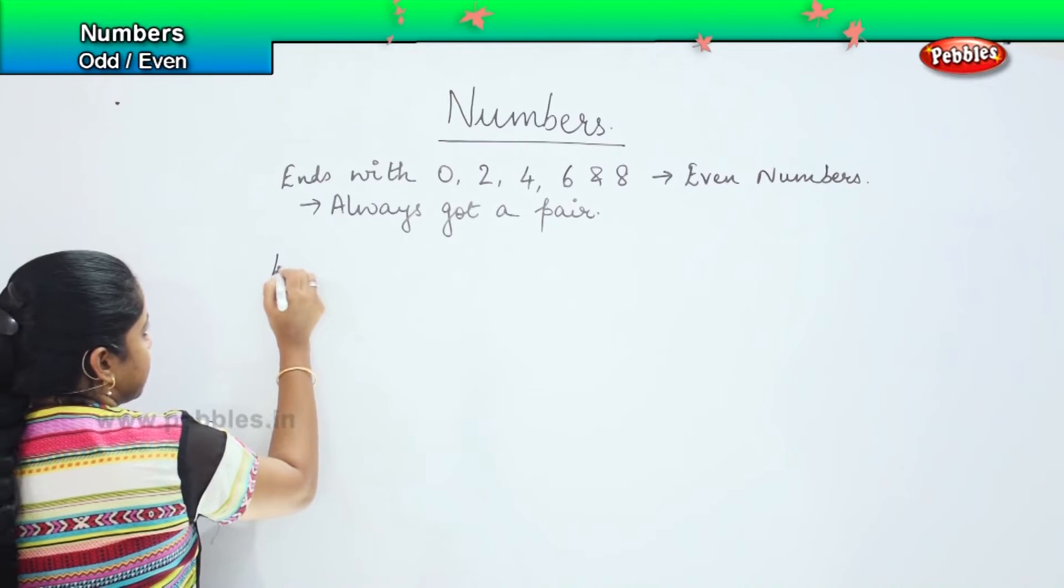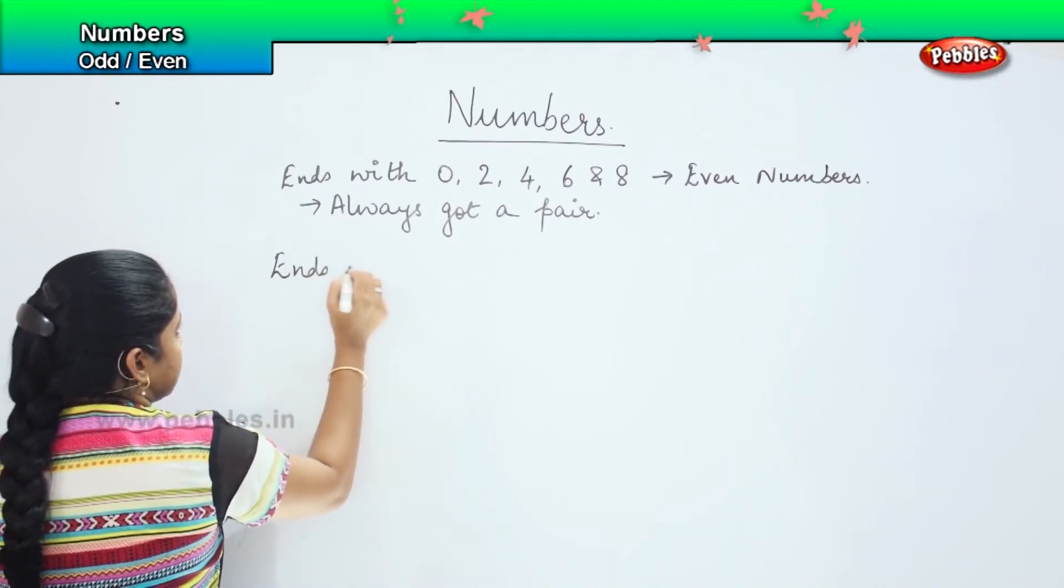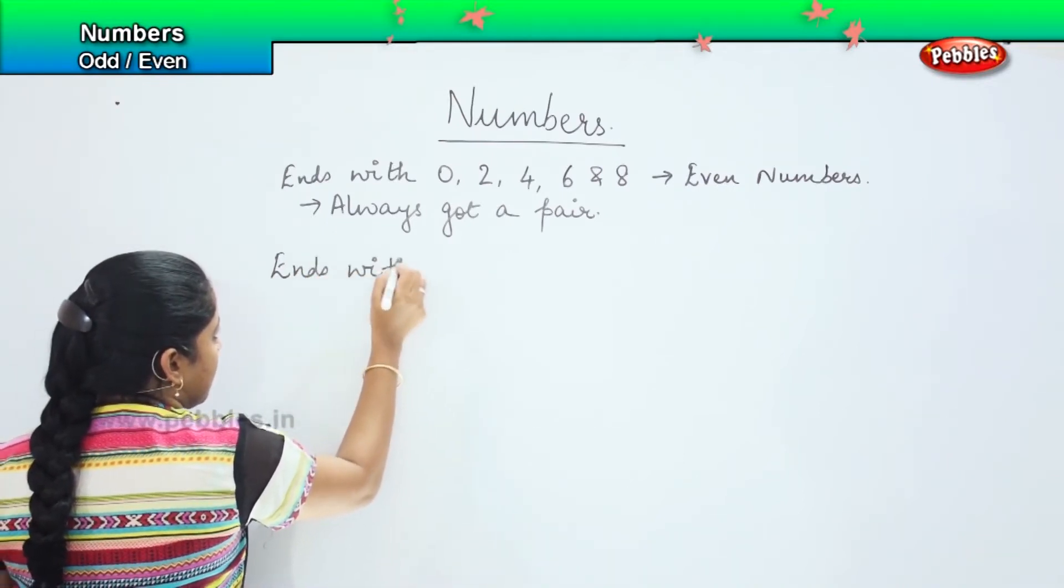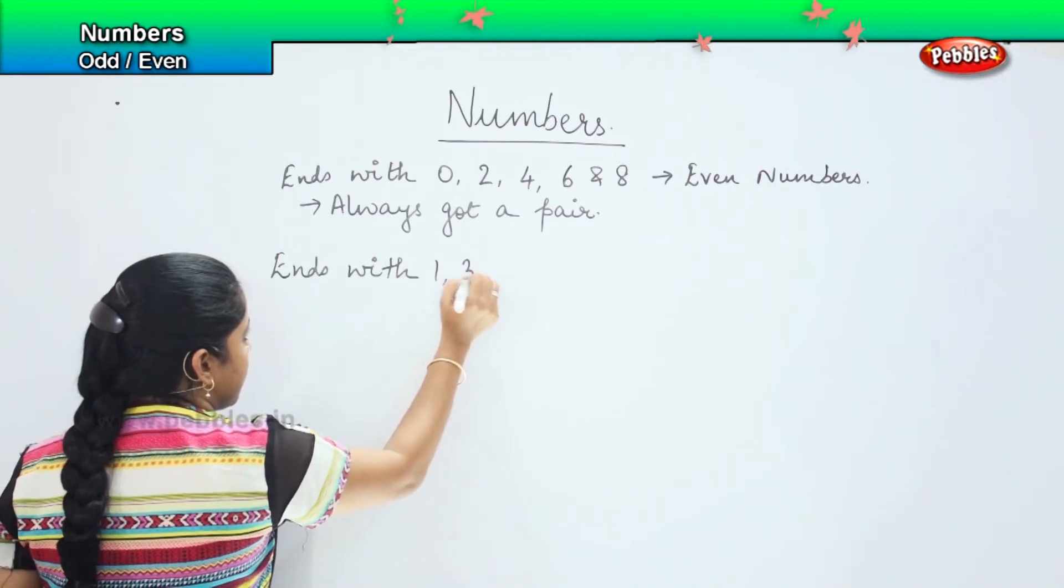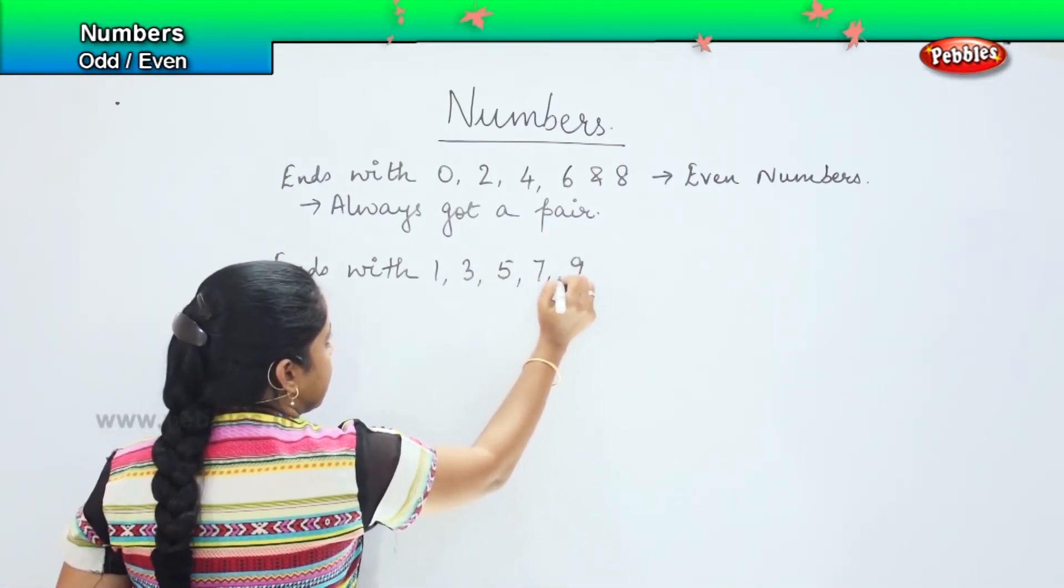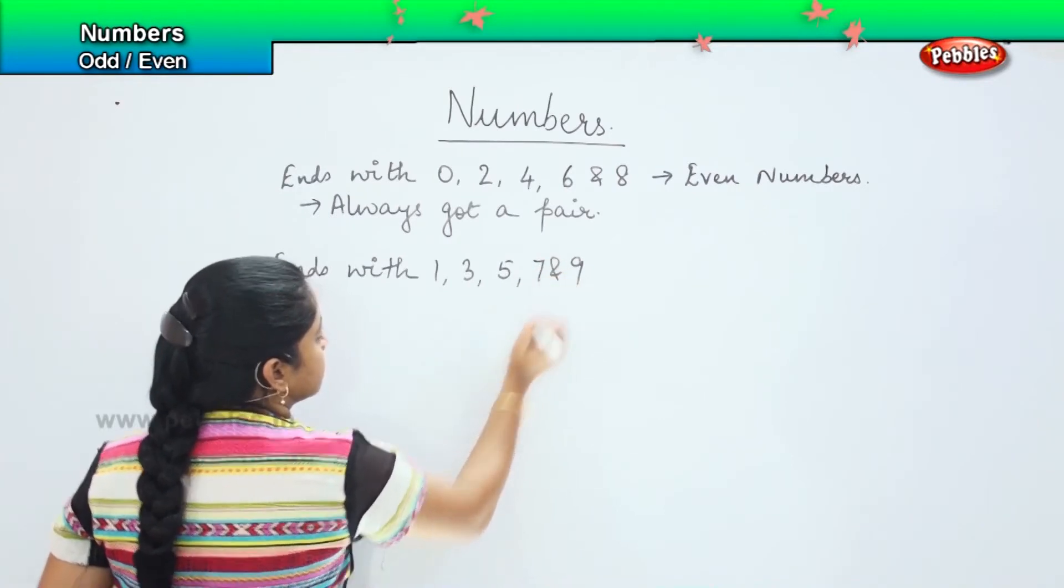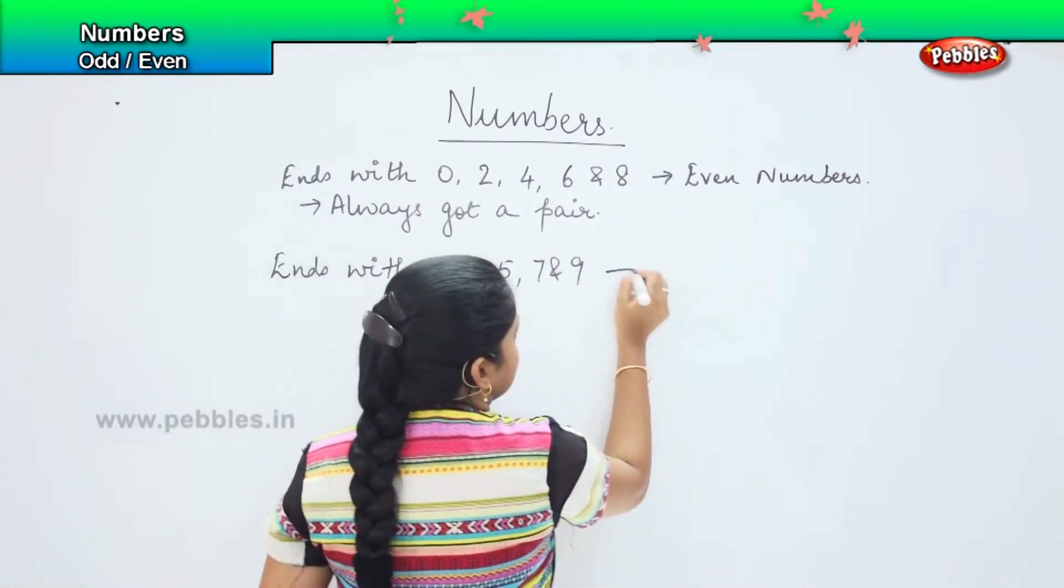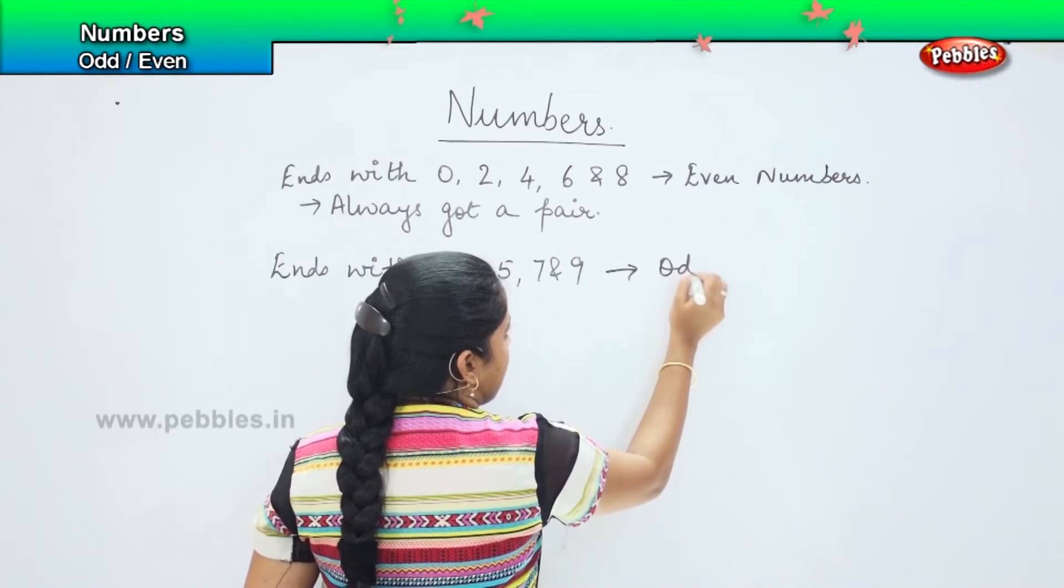Similarly, the numbers which end with 1, 3, 5, 7, and 9 are called odd numbers.